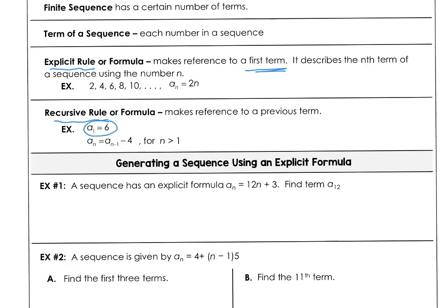So if you started at 6, that's the first term where n is 1. If we wanted to find the second term, we would have to know the first term, which was 6, and then subtract 4. So to find the second term, it would be 6 minus 4, which gives us 2. So this sequence would start off 6, then 2, and so on. That's called a recursive rule.